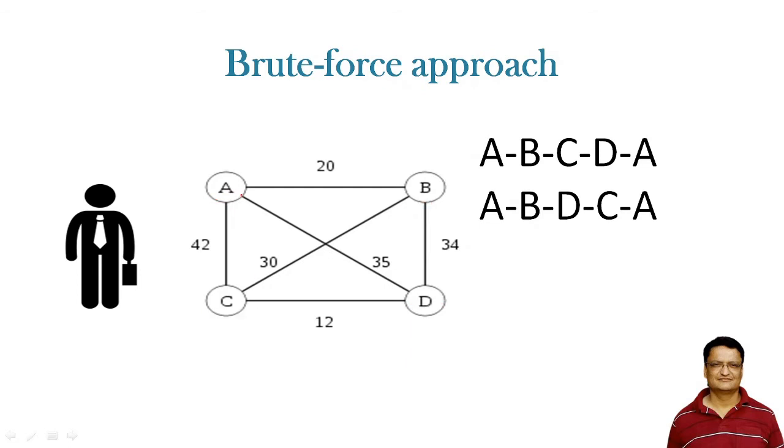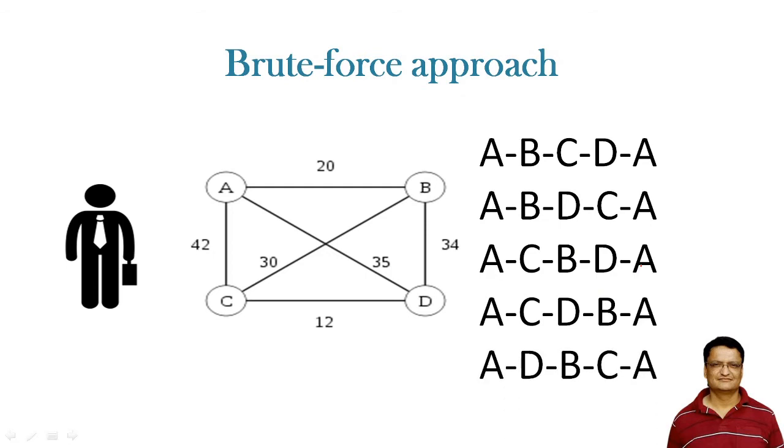What could be the other approaches? He could start with A and go to C, B, D, A. There will be more options: A, C, D, B, A; A, D, B, C, A; and the last one is A, D, C, B, A. So in total, for four cities, I got six options.